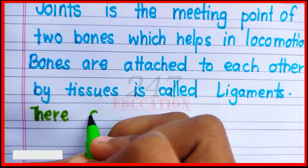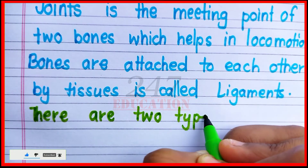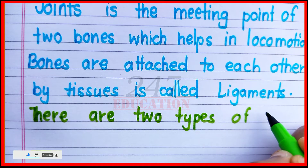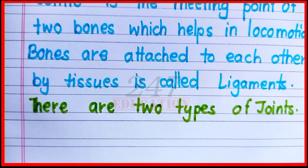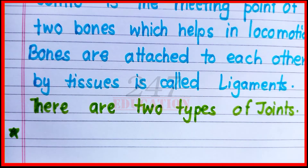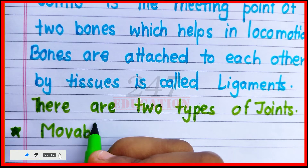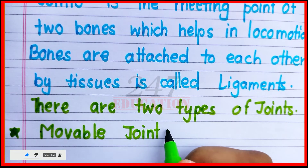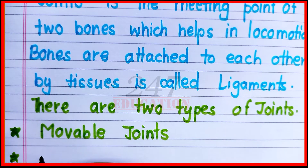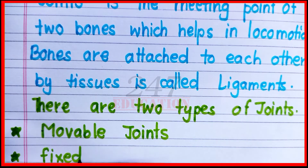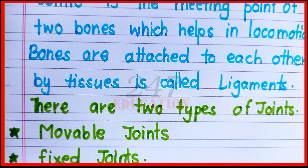There are two types of joints: first, movable joints; second, fixed joints.